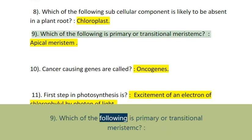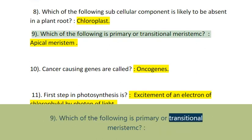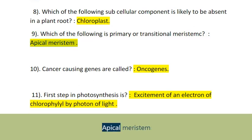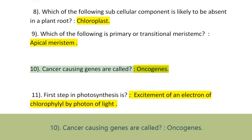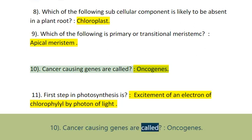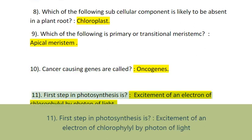Question 9: Which of the following is a primary or transitional meristem? Apical meristem. Question 10: Cancer-causing genes are called Oncogenes.